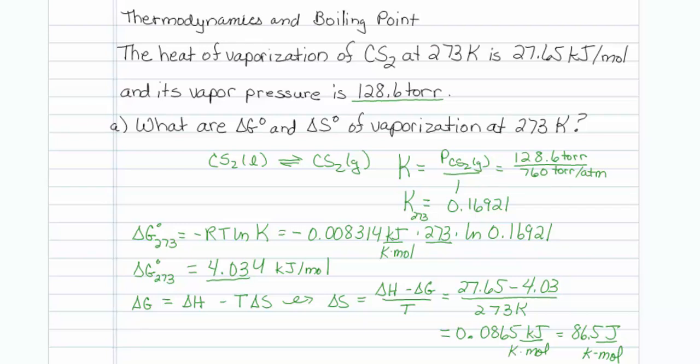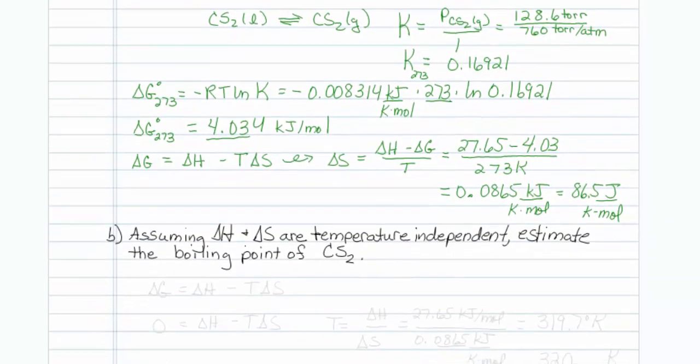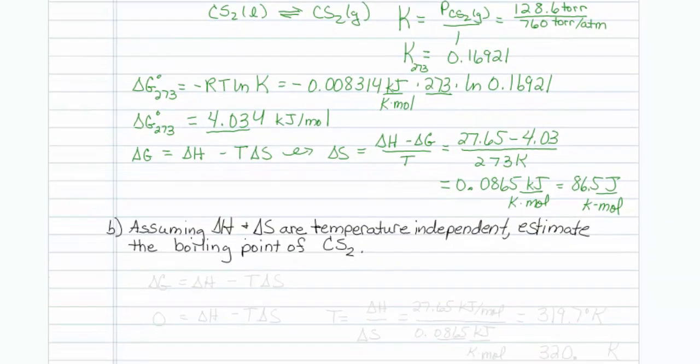The last part of the question says, assuming delta H and delta S are temperature independent, estimate the boiling point of carbon disulfide. Well, that occurs when the free energy is equal to 0. So we can use this formula, delta G is equal to delta H minus T delta S.